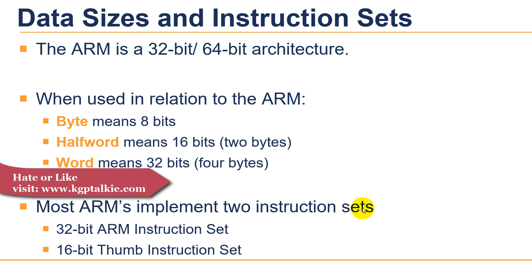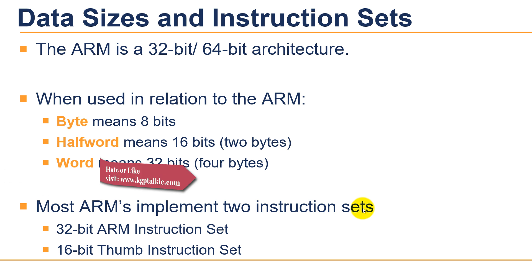We have Thumb, Thumb-2, and the ARM instruction set. One core in particular, the ARM Cortex-M3, executes only the Thumb-2 instruction set and not ARM code. All Thumb-2 instructions are 16-bit long. I will cover Thumb and the ARM instruction set in the next tutorial. There is another type of instruction set known as Java bytecode, which are 8-bit instructions designed to be architecture-independent, but in further tutorials we will only discuss Thumb and the ARM instruction set.